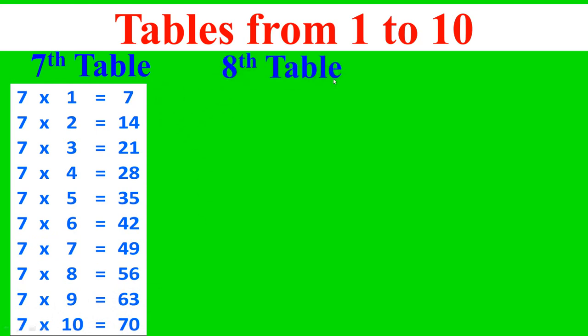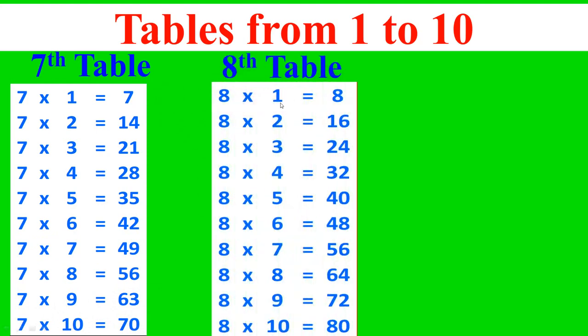8th table: 8 times 1 equals 8, 8 times 2 equals 16, 8 times 3 equals 24, 8 times 4 equals 32, 8 times 5 equals 40, 8 times 6 equals 48, 8 times 7 equals 56, 8 times 8 equals 64, 8 times 9 equals 72, 8 times 10 equals 80.